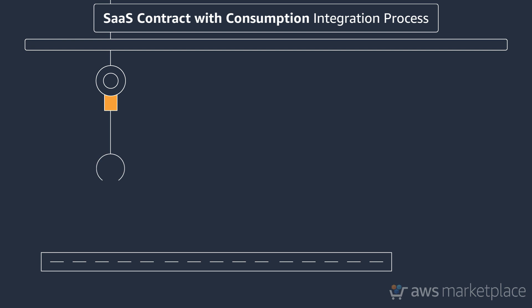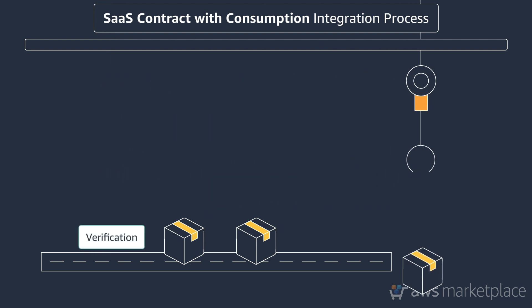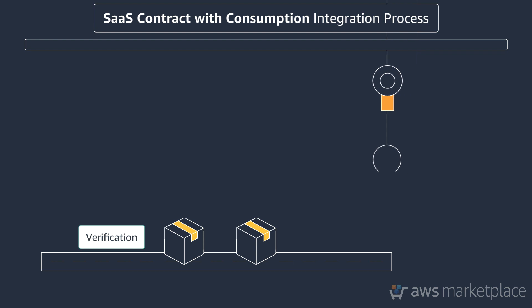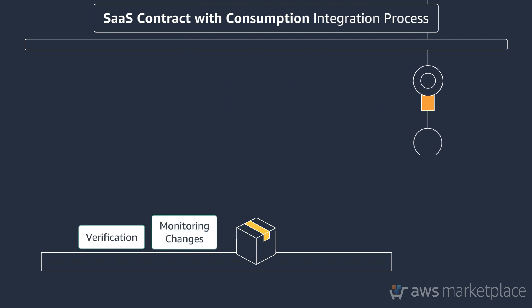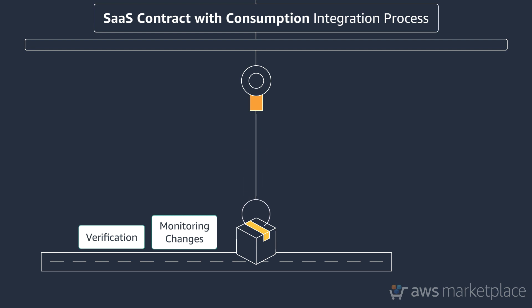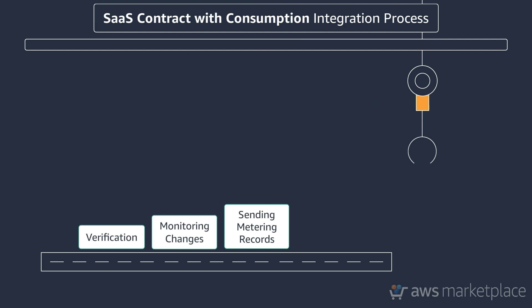Finally, let's move into the SaaS contract with consumption pricing model. Integration for these products combines all the concepts from SaaS contract and SaaS subscription. As outlined in other models, you will need to exchange the token for a customer ID and product code. Verify the customer has an active subscription and grant access based on the entitlement. To monitor for changes, you will receive two SNS topics and receive all the message types published for SaaS subscription and contract. Sending metering records for additional usage is similar to SaaS subscription — you will use the batch meter usage operation in the Marketplace metering service to send metered records.